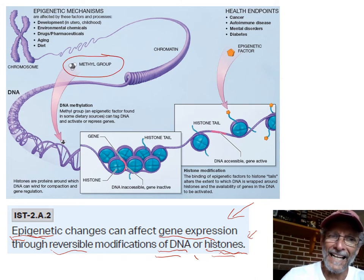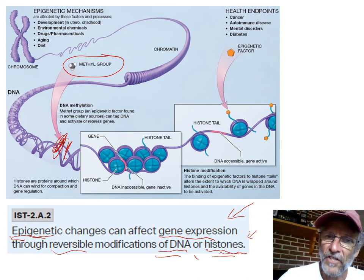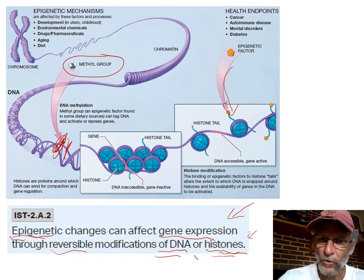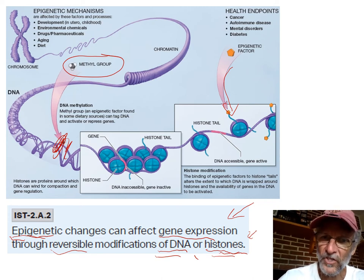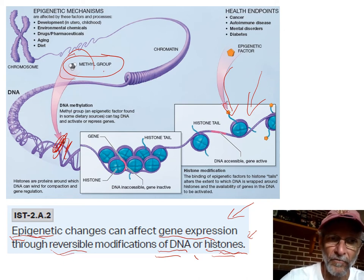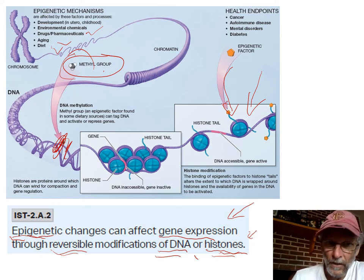They can tell you a story about methyl groups — methyl groups keep DNA all coiled up so it can't be unzipped and used. Or they can tell you that the histone proteins can have something attached to them, not to the DNA but to the proteins, and that loosens the DNA up so it can be used. Acetyl groups can attach to histones and turn that gene on. Methyl groups are usually an off switch. These groups can be attached or removed reversibly, influenced by diet, aging, and different kinds of chemicals.